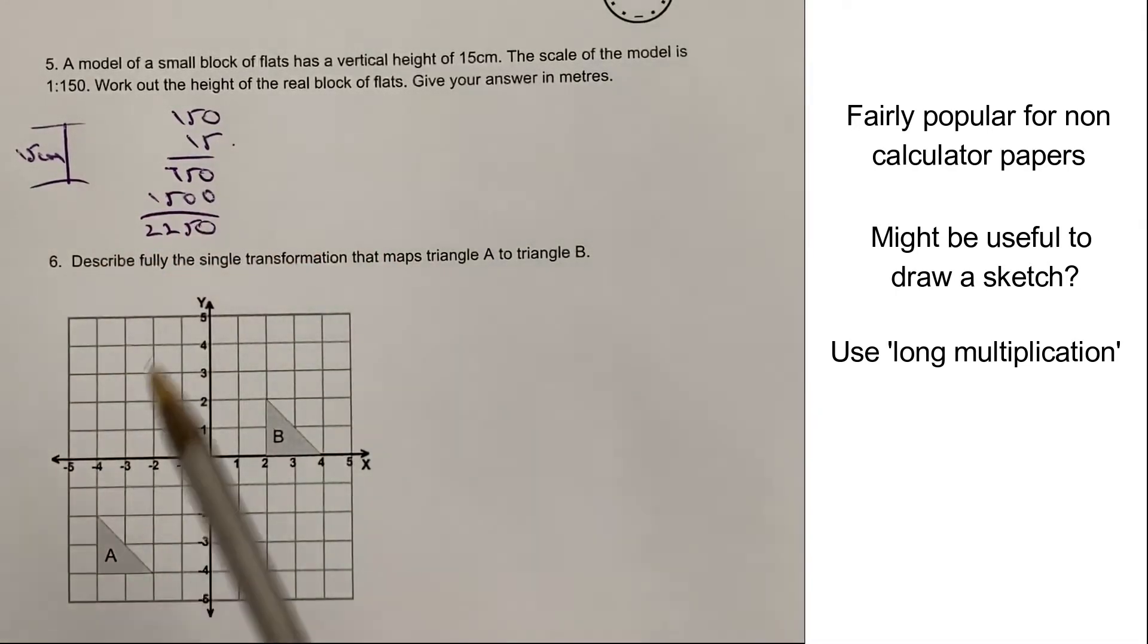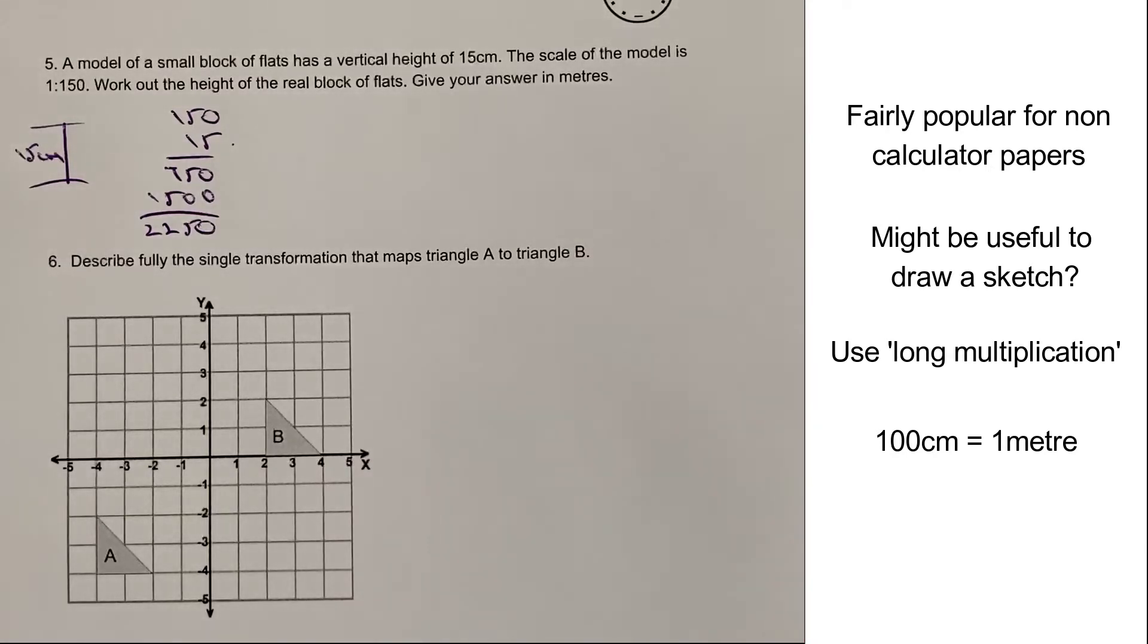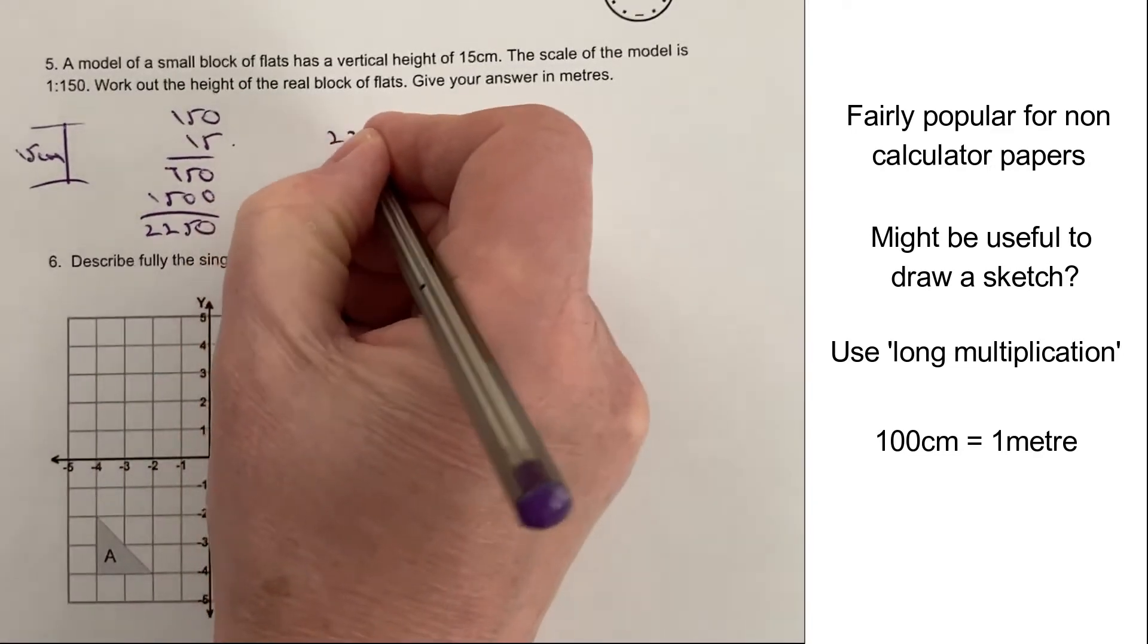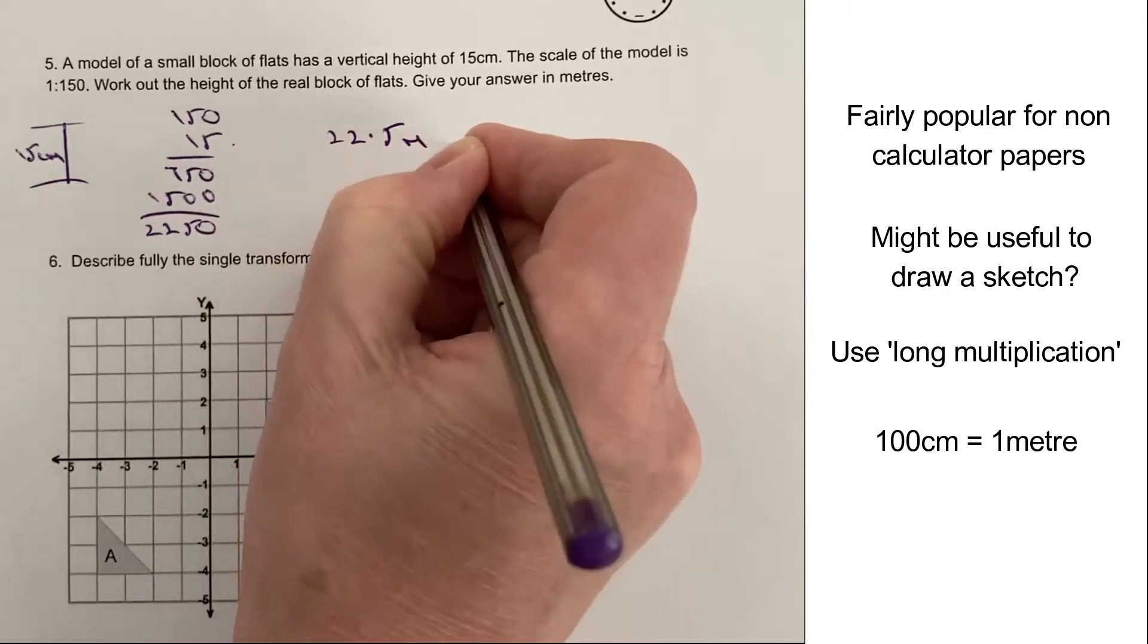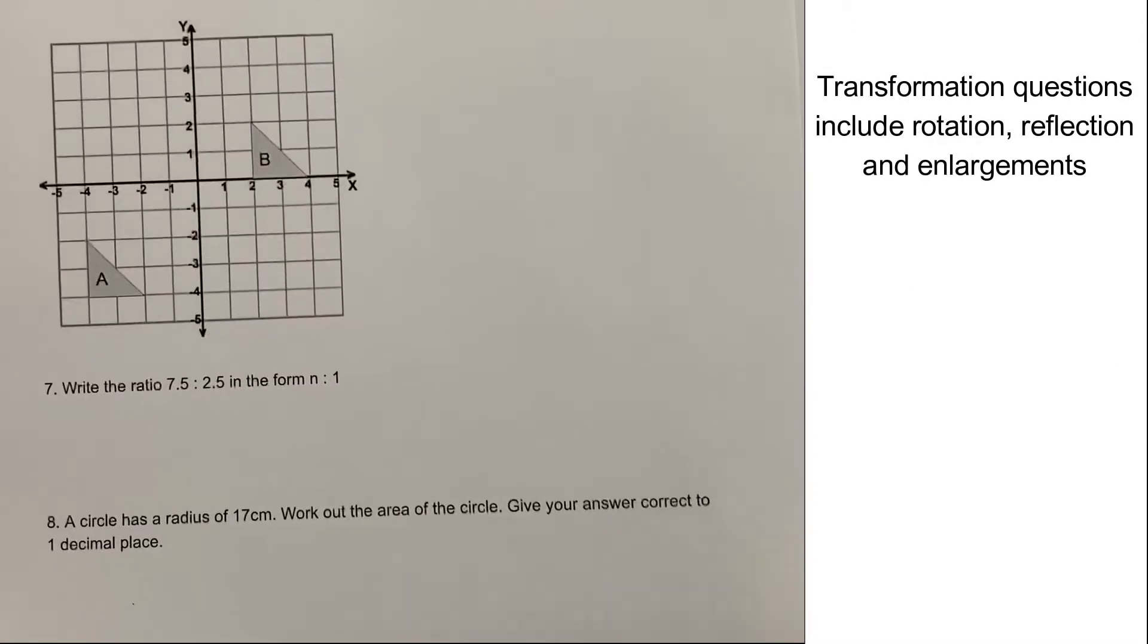Now don't forget that 2250 is actually the amount of centimetres. And it does ask you to give the answer in metres. So therefore, we need to divide by 100. The way we're going to do that is move the decimal point two places. So the actual answer to the question will be 22.5 metres. Okay, hopefully that's all right for you. Let's move on to question number six.